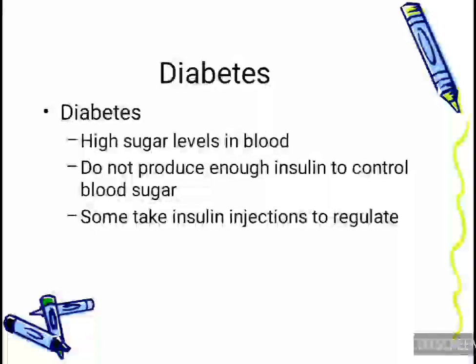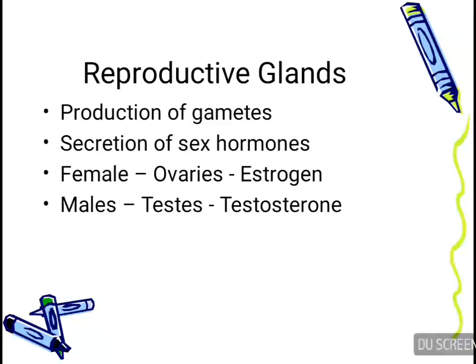Let us talk about diabetes. Diabetes is a condition of high sugar levels in the blood. In a diabetic patient, the body does not produce enough insulin to control the blood sugar level, so some people have to take insulin injections to regulate it.